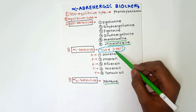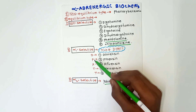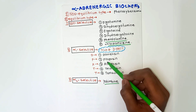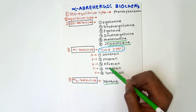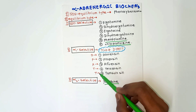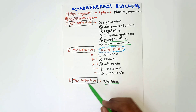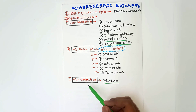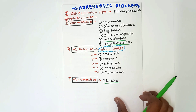D-PAT stands for: D for doxazosin, P for prazosin, A for alfuzosin, T for terazosin, and T for tamsulosin. For alpha-2 selective, the only drug is yohimbine.